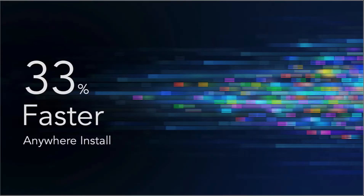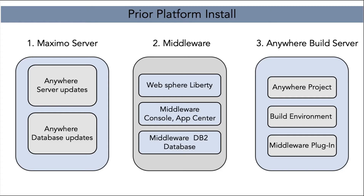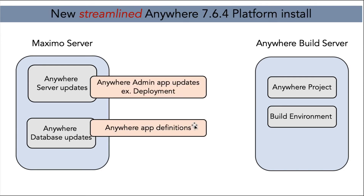With this new architecture, we are able to do things much quicker, including the Anywhere installation. When we look back at the prior platform install, there were three components that needed to be installed and enabled to communicate together: Maximo on the far left, our middleware component including the middleware application server and database, and on the far right our Anywhere build server where we build and deploy the applications. Moving forward with the streamlined architecture, our install is simplified.